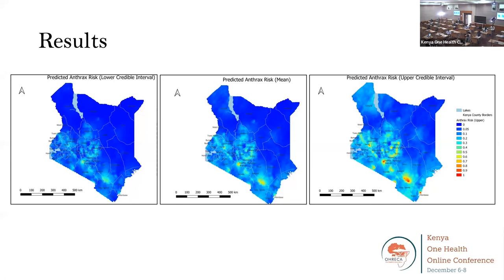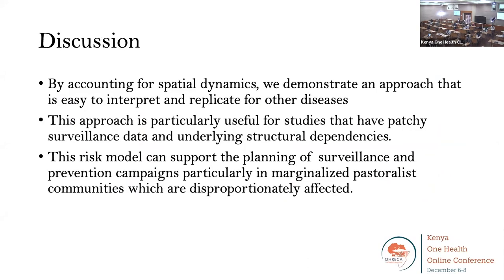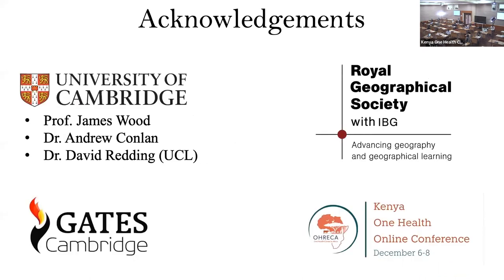These pastoralists are often economically and politically marginalized, lacking access to veterinary and public health services, putting them at greater risk of zoonotic diseases like anthrax. The sparsity of recorded outbreaks in this region likely reflects limited surveillance rather than the absence of cases, and more effort should be put in place to improve anthrax surveillance there. By accounting for spatial dynamics, we demonstrate an approach that is easy to interpret and replicate for other diseases, particularly useful for studies with patchy surveillance data and underlying structural dependencies. This risk model can support planning of surveillance and prevention campaigns in marginalized pastoralist communities.